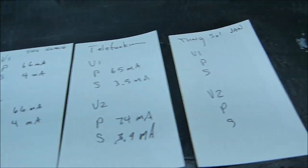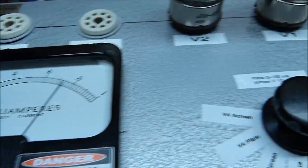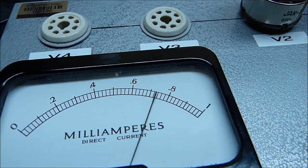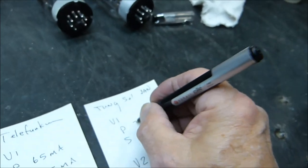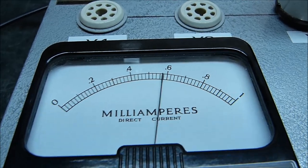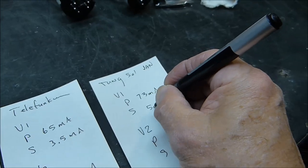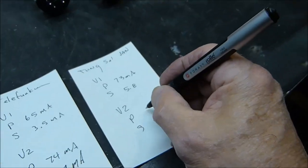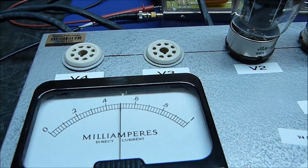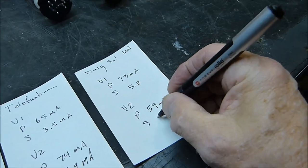V1, let's see - we have 73 milliamps and the screen is 5.8. And V2 is about 59 milliamps with a screen of 5 milliamps.